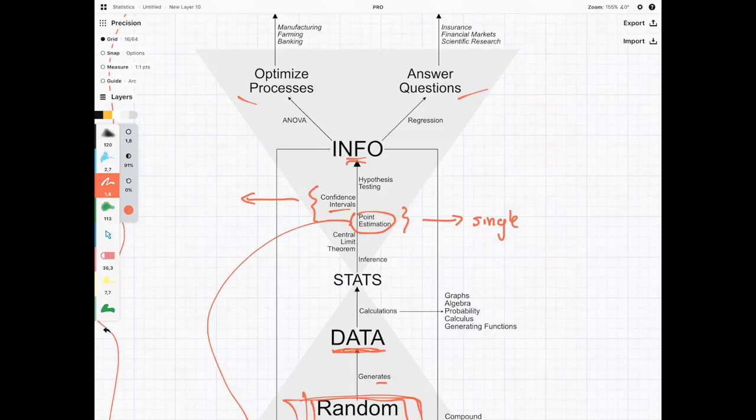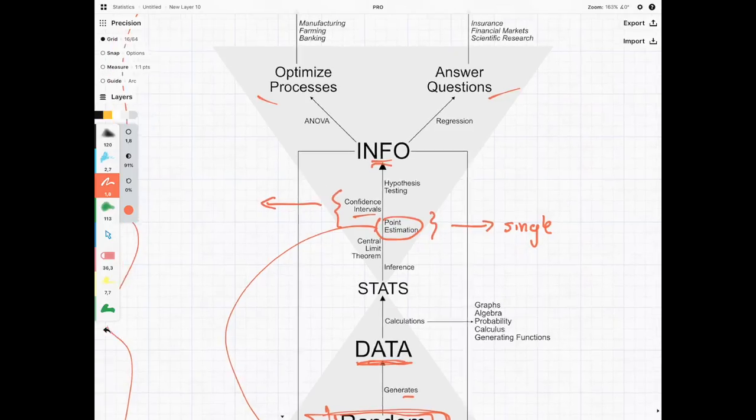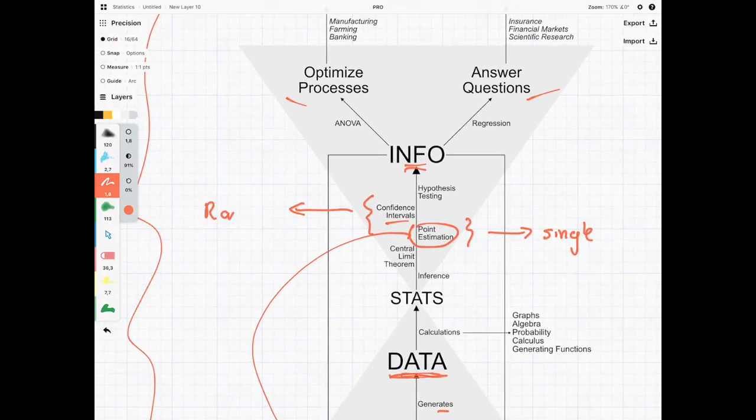We're now understanding that these single values are random variables in their own right and it might be better for us to look at a range and once we start looking at this range it's going to help us when we come to hypothesis testing which is the following course.